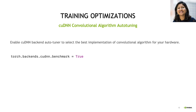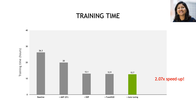The last optimization was to enable auto-tuning of the most optimized convolutional algorithm implementations available through CUDNN. This can be turned on with a simple command by setting CUDNN's benchmark mode to true. For your particular application, it analyzes the various convolutional algorithm implementations in CUDNN and picks the most efficient ones. We improved from 12.9 hours to 12.7 hours by enabling this auto-tuning. Effectively, comparing to our baseline, we went from 26.3 hours for the unoptimized version down to 12.7 hours — a 2.07x speedup by enabling all these optimizations.